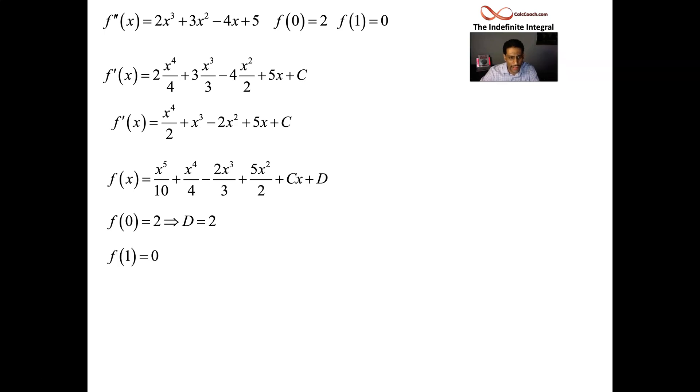So d must be 2. So let's put that in. And let's plug a 1 in. Now we have some fraction arithmetic. It's kind of nasty. 1 10th and 1 4th minus 2 3rds plus a 5 halves.